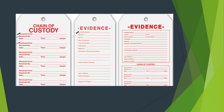The form includes fields for: evidence, submitting agency, case number, item number, date of collection, time of collection, collected by, batch number, description, location, type of crime, victim's full name, and suspect's full name. These are all things we have to maintain — you have to feed all this information into the form.